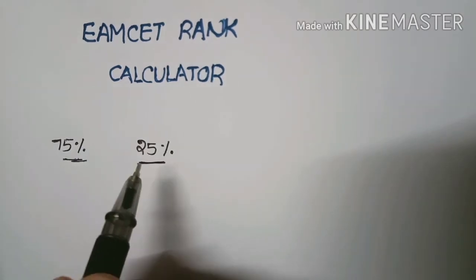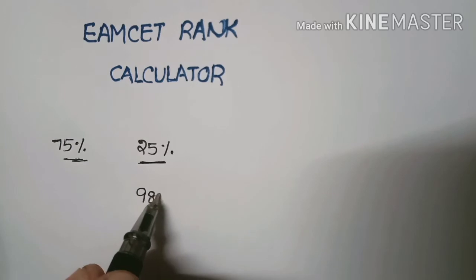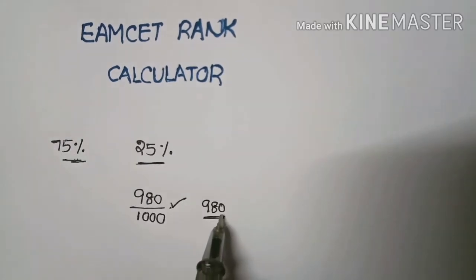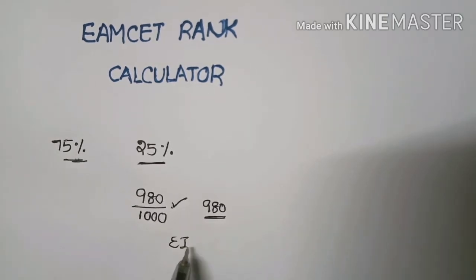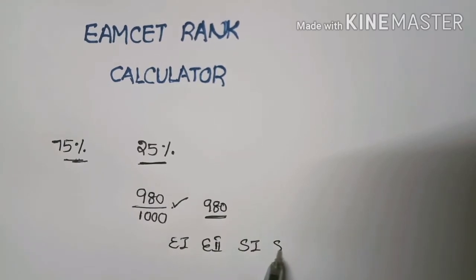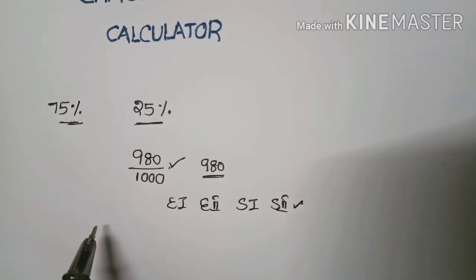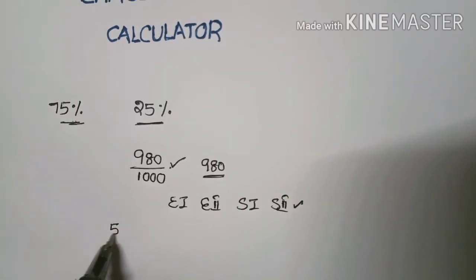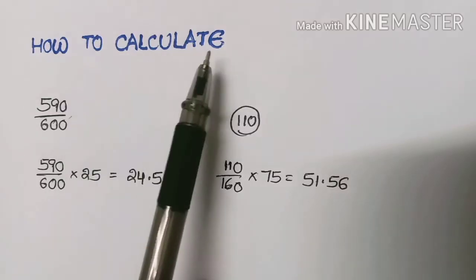The intermediate marks means we take the NPC group marks only, including the practicals. For example, if the student secured 980 out of 1000 marks in the intermediate exam, we don't take the full 980. From those 980 marks, we remove English 1, English 2, Sanskrit 1, and Sanskrit 2 marks, and take the remaining marks only. If after removing those marks we get a total of 590, then we take these marks to calculate the MSET score.